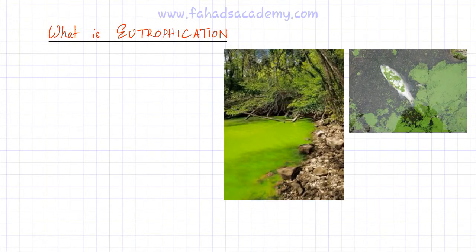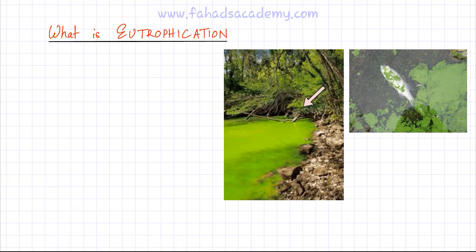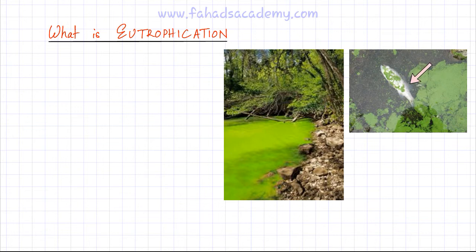In this video lecture we're going to discuss what is meant by the term eutrophication. It's a term you've probably not heard of, but what you have probably seen is ponds, rivers, or stagnant water bodies covered by green algae. This green algae causes the death of marine plants and animals, like fishes. This entire process is called eutrophication, and we'll discuss its causes and effects on the environment.